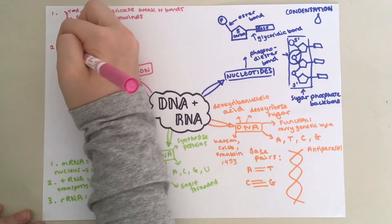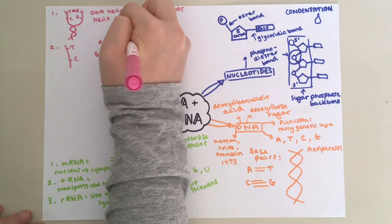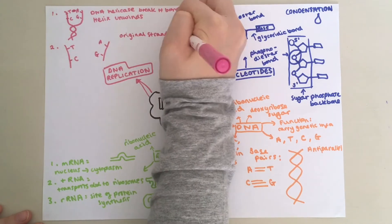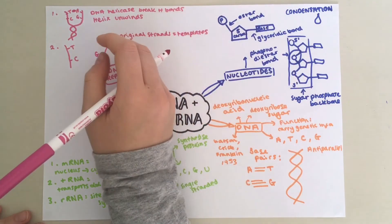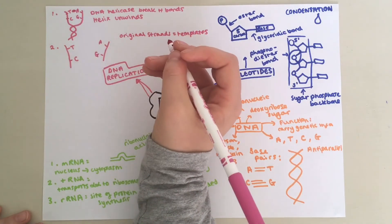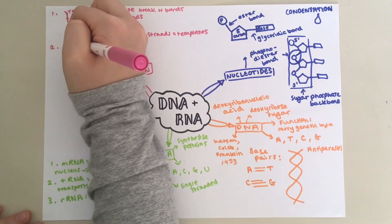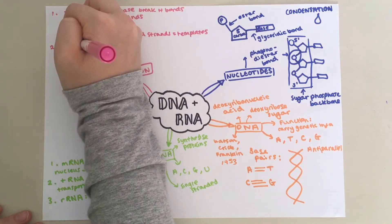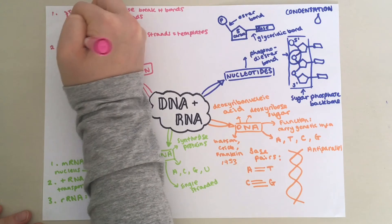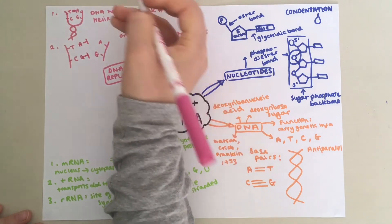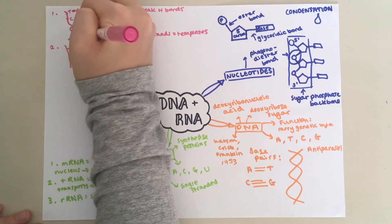Step two. The original strands will act as templates. Complementary base pairing means that free floating nucleotides are attracted to the nucleotides on the template strand. So, an A would be attracted to this T. A G would be attracted to this C, etc.